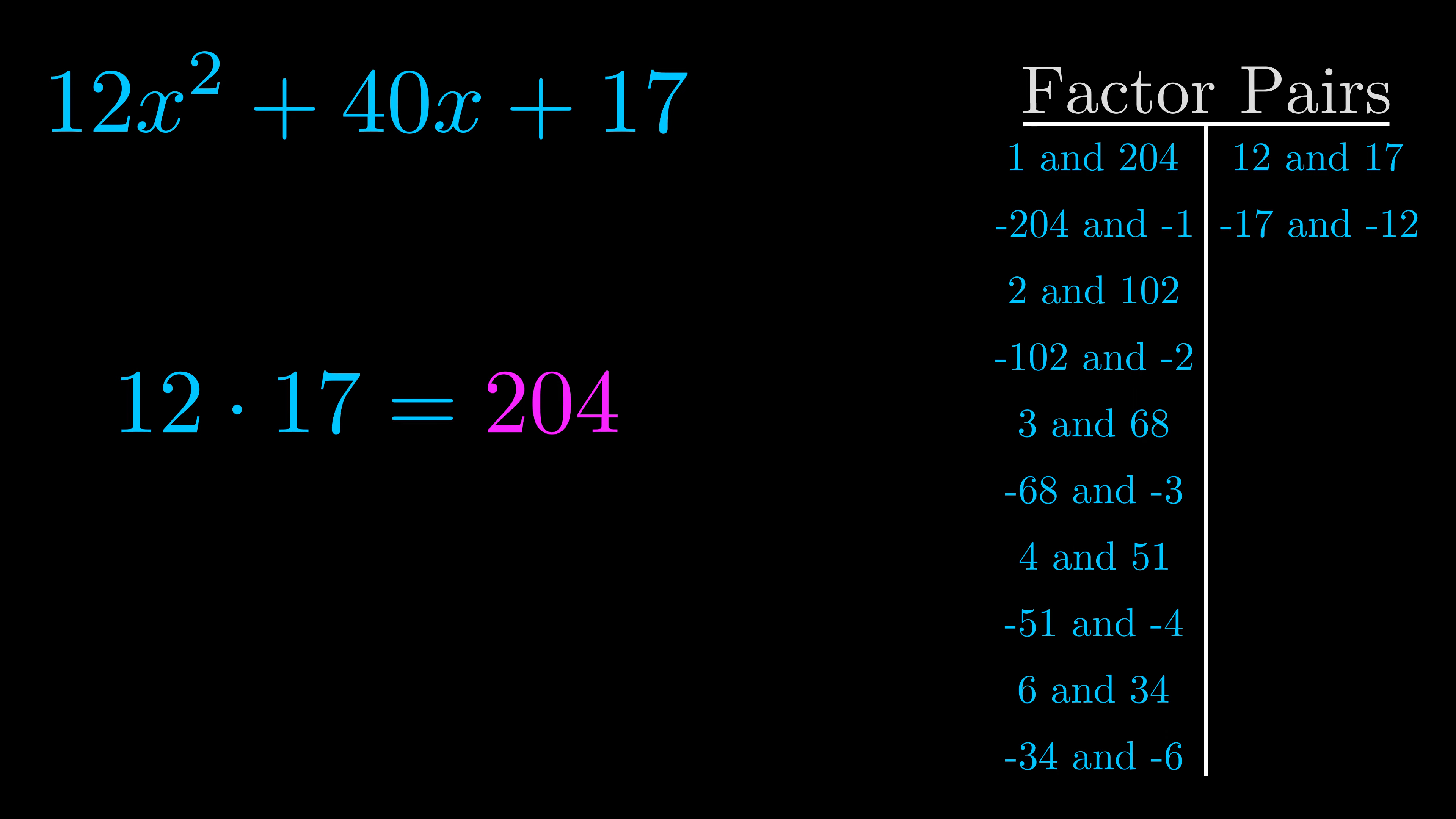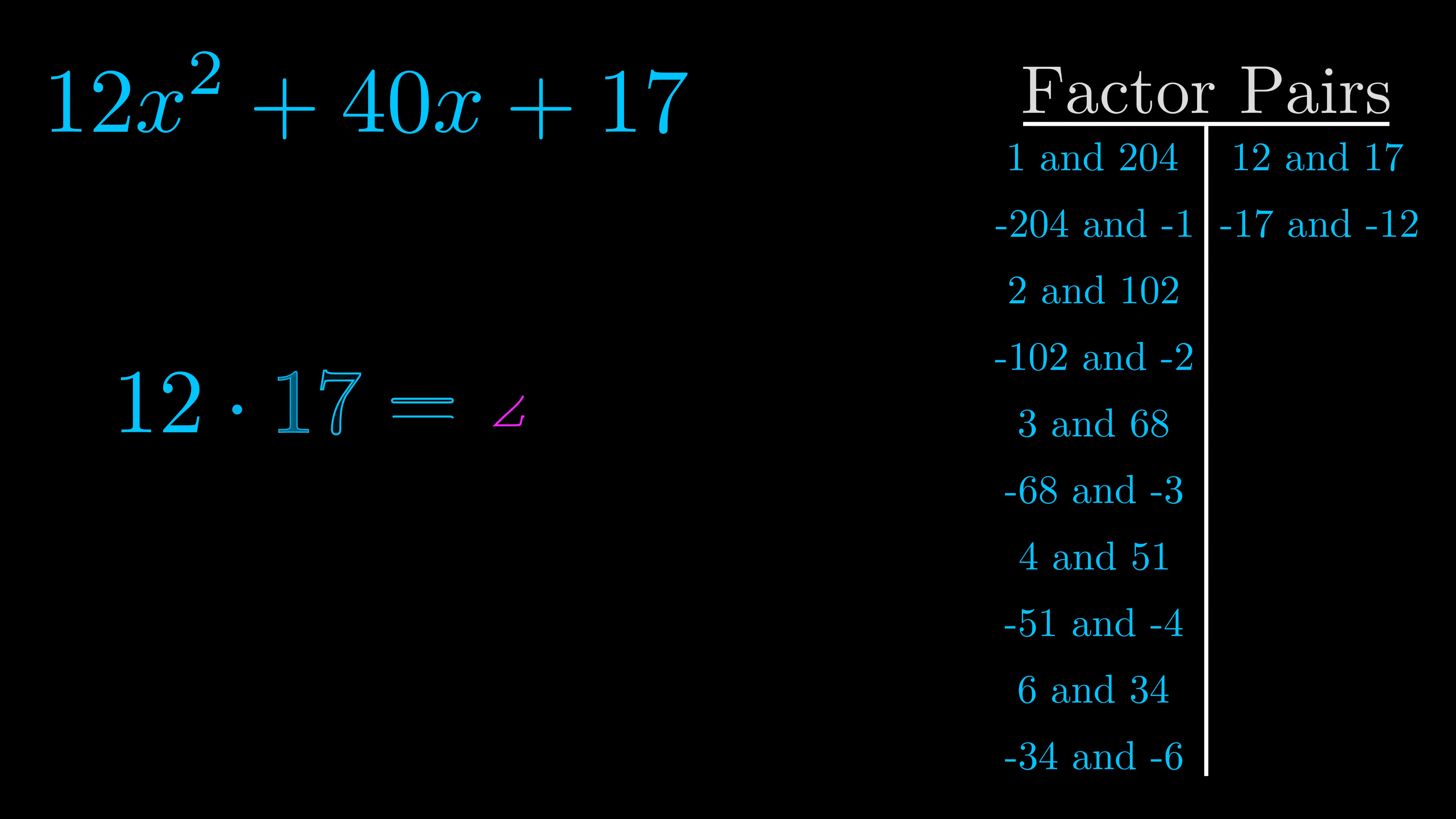Now once you have these factor pairs the goal is to find which of these pairs adds to the b value. The b value is the coefficient on the x term. That's the middle term, the one that we haven't done anything with yet. And really this is the only factor pair that we need.